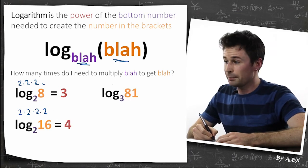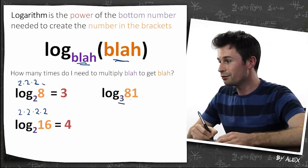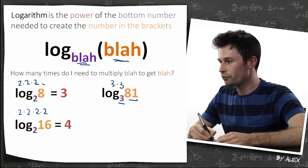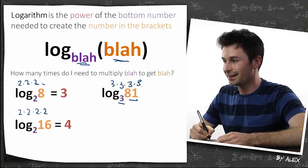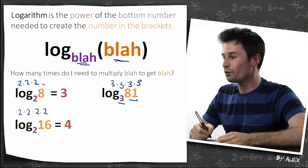Or something like this. How many times do I need to multiply 3 by itself to get 81? Well, 3 times 3 is 9 times 3 is 27 times 3 is 81. So the answer is 4.